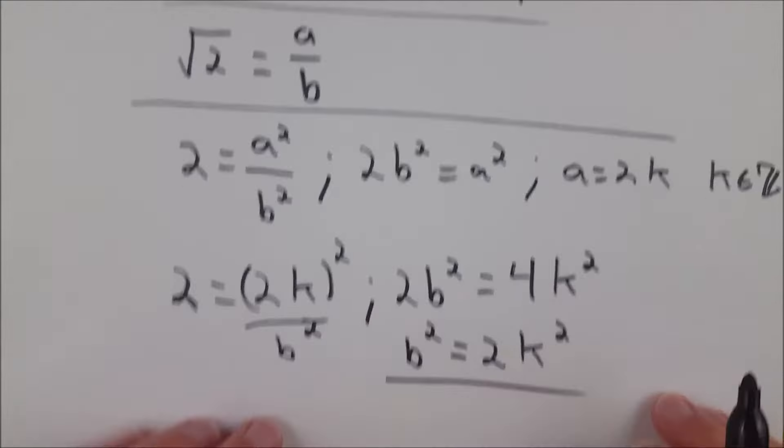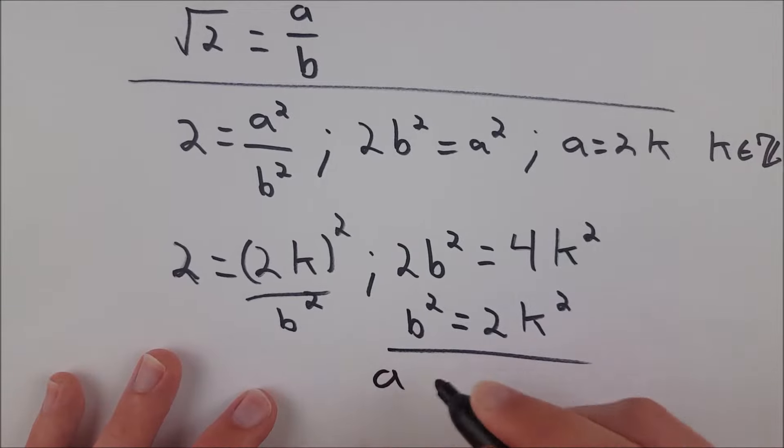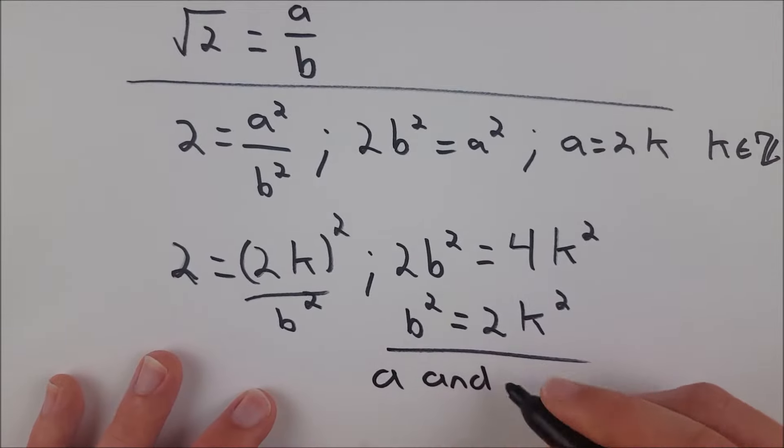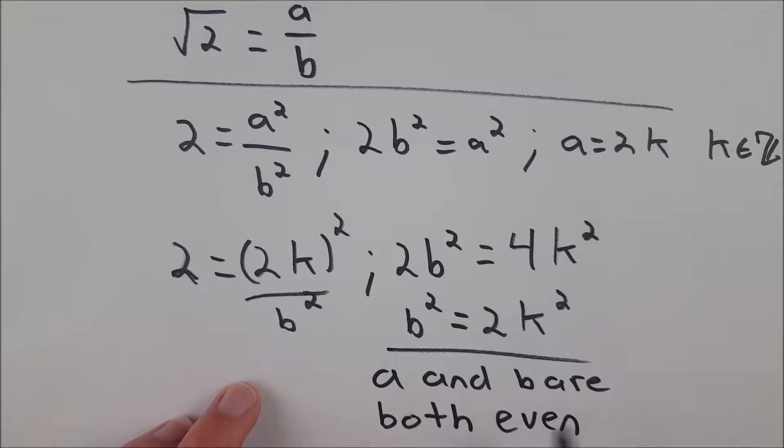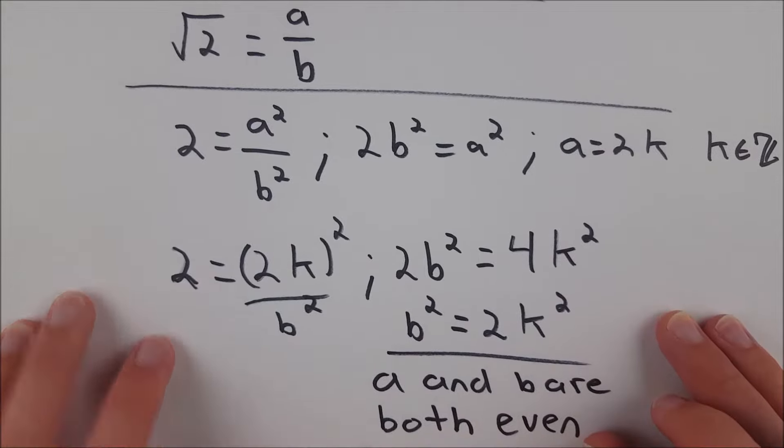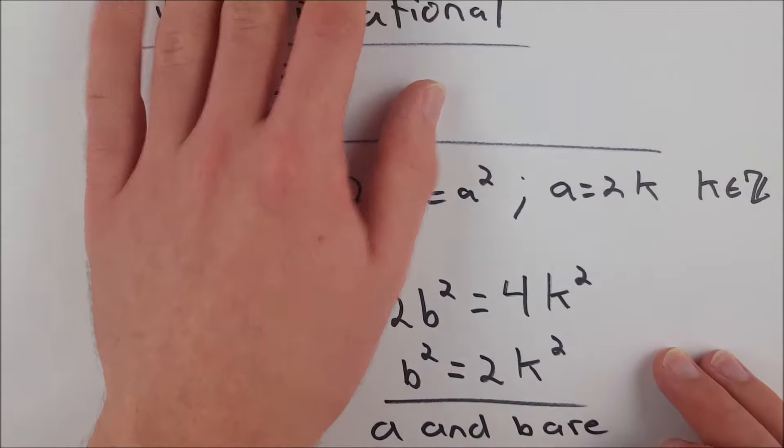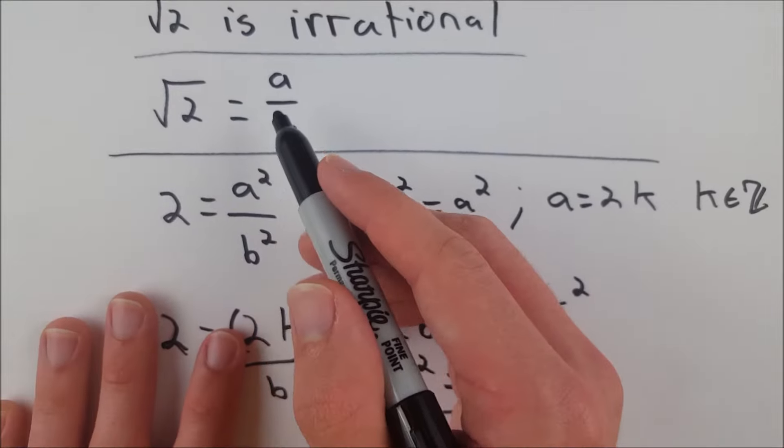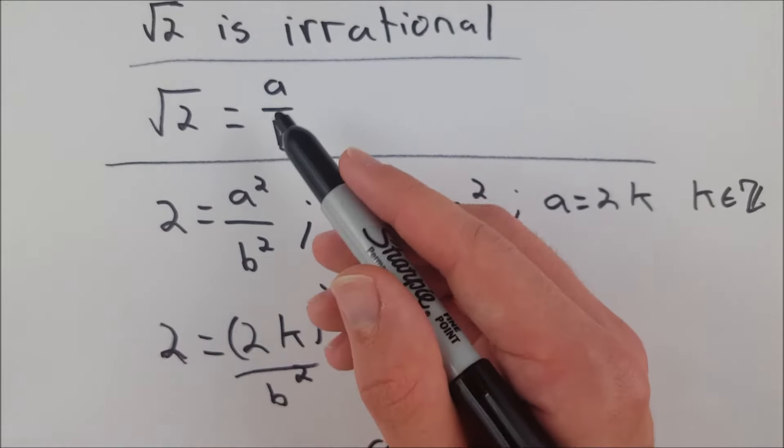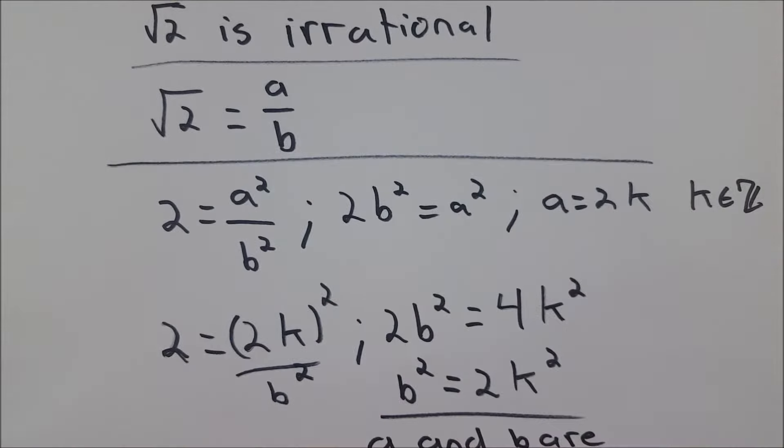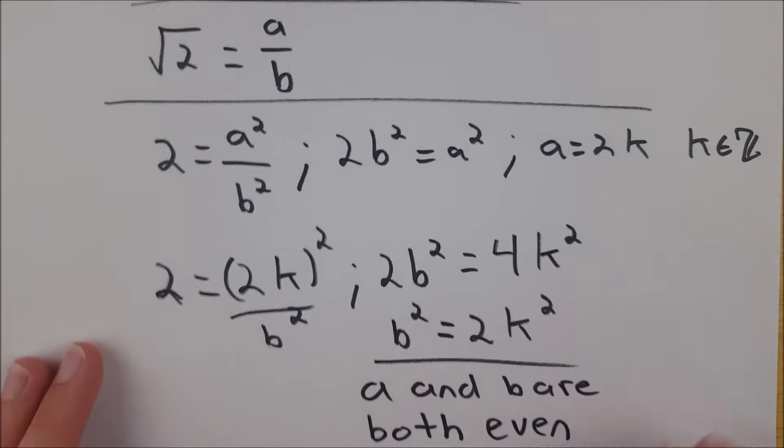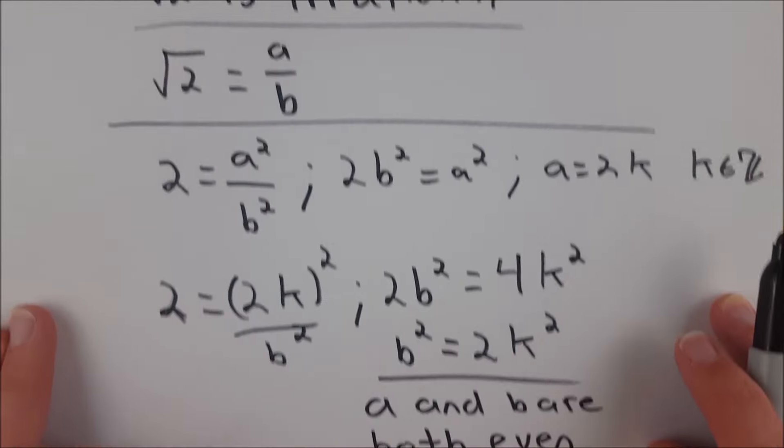So our final conclusion, which is the contradiction, is that a and b are both even. That means they have common factors of 2, which contradicts our original assumption that this fraction a over b was in its lowest terms, which meant that a and b didn't have any common factors. We see now that they do, which is a contradiction.